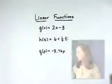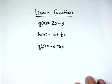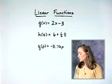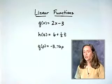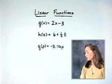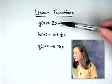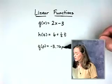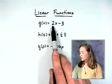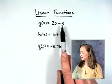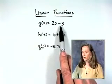Here's some examples of linear functions. G of x equals 2x minus 3. H of t is 6 plus 1 half t. G of p equals negative 3.76p. The thing that makes these three linear functions is the power on the independent variable is 1. Notice that in G of x, the number 2 represents a, and negative 3 sits where the b would be.